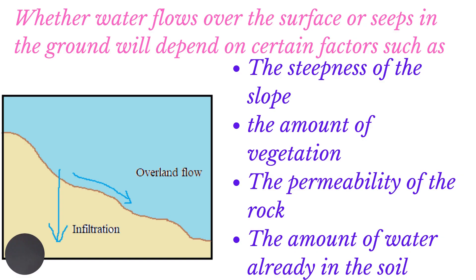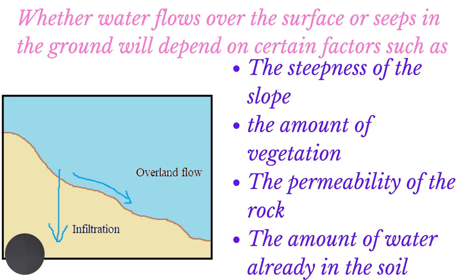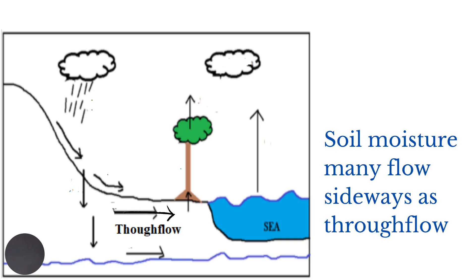Surfaces that are void of vegetation will encourage overland flow, whereas more infiltration will occur where there is a large amount of vegetation. Impermeable rocks will encourage overland flow; permeable rocks will encourage infiltration. If the soil is already saturated with water, then less infiltration will occur and more overland flow will occur.